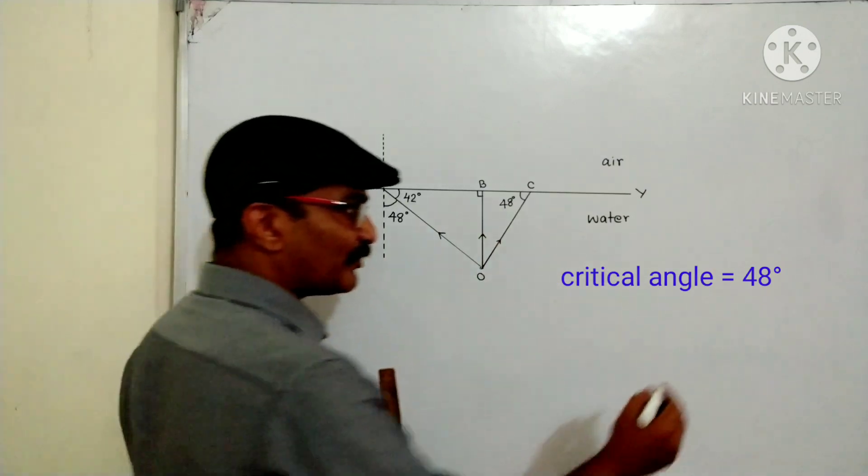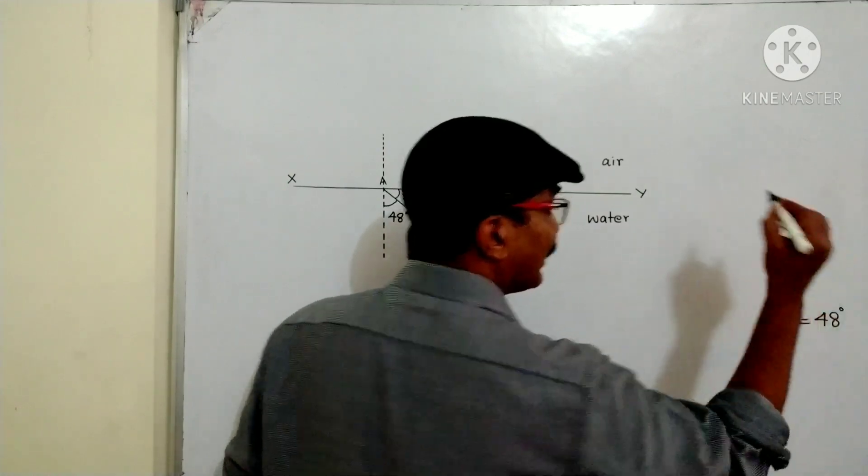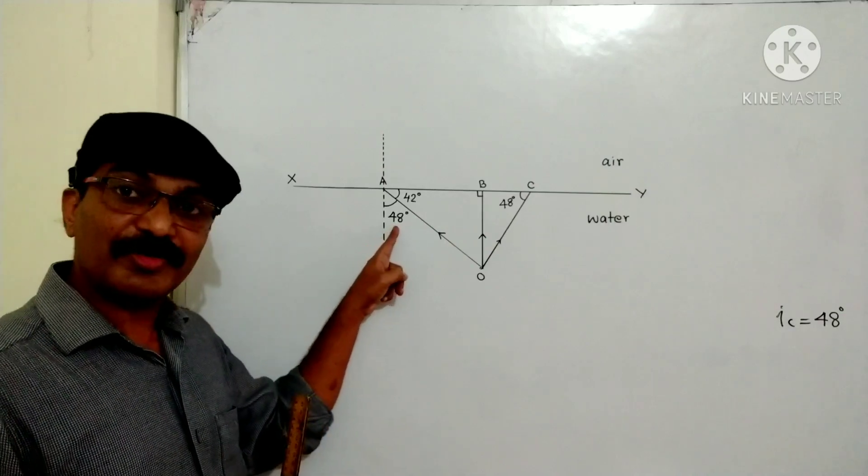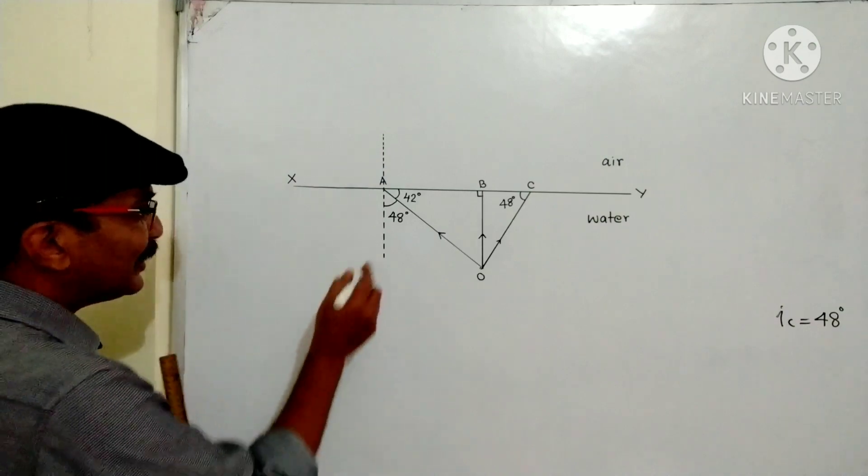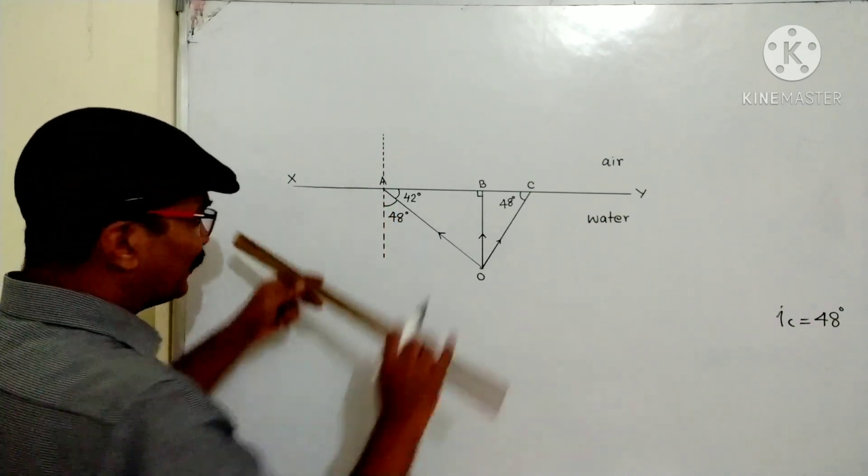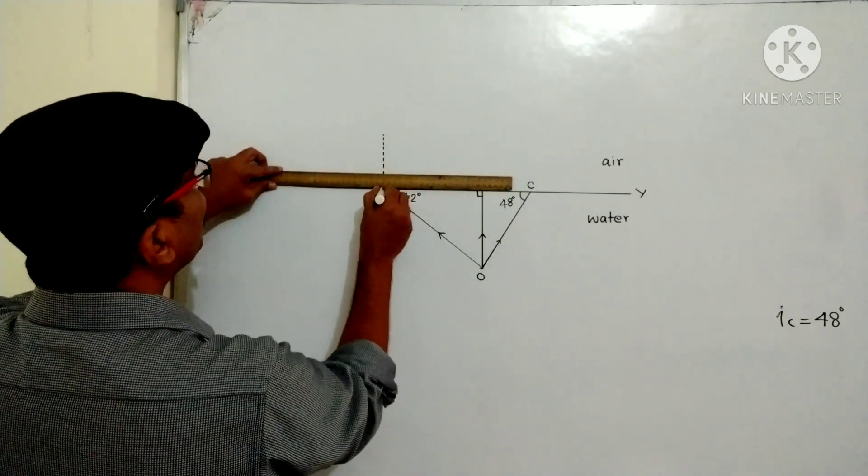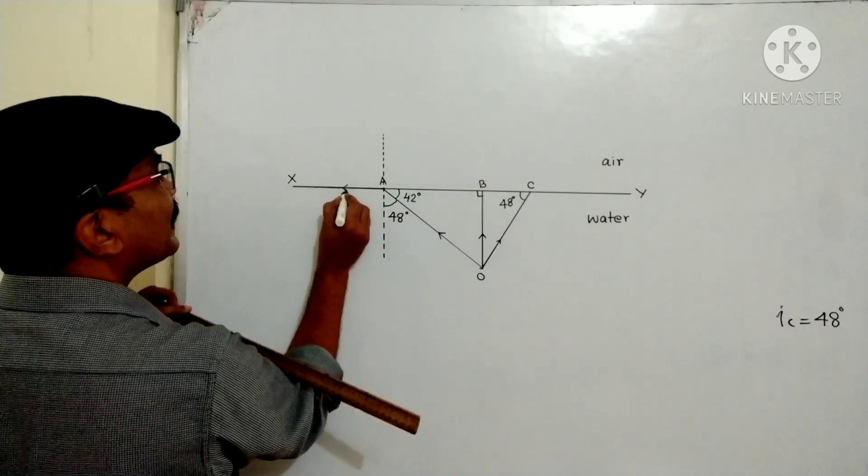The critical angle was given as 48 degrees. So here, this angle of incidence is equal to critical angle. Then what happens? The refracted ray grazes the surface. So this will be the refracted ray.